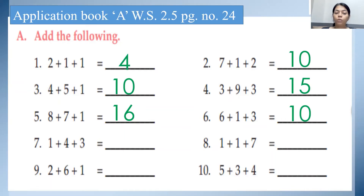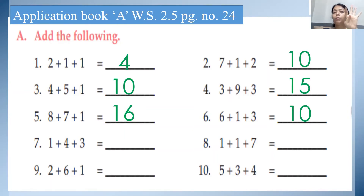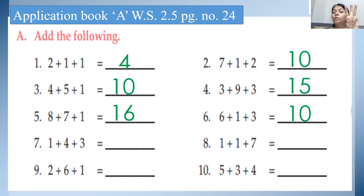See the seventh one: 1 plus 4 plus 3. So 1 in the mind, 4 on the finger. After 1, count the next number: 2, 3, 4, 5. Now 5 in the mind, 3 on the finger. After 5: 6, 7, 8. So 1 plus 4 plus 3, the answer is 8.